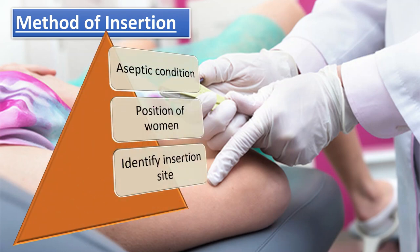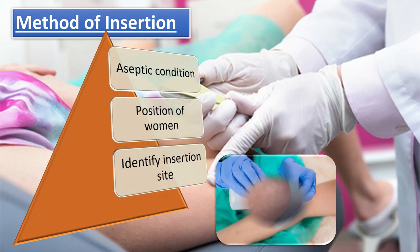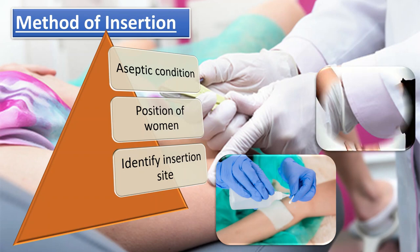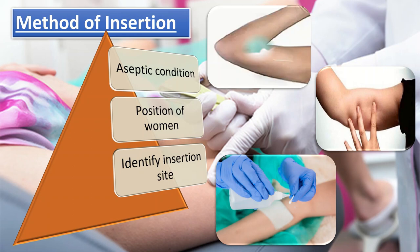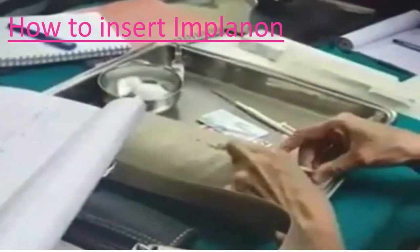For the method of insertion, first ensure aseptic conditions. Insert Implanon under aseptic conditions in the non-dominant arm. Ask the woman to lie on her back with her arm flexed at the elbow and externally rotated. Identify the insertion site at the inner side of the non-dominant upper arm, 8 to 10 centimeters above the medial epicondyle of the humerus.